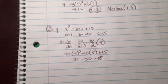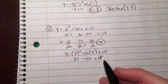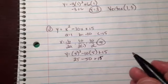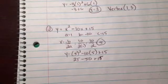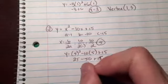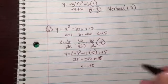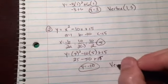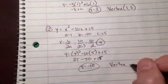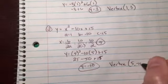All right, so 25 minus 50, that's -25, and then add 15 to that, that's -10. So you get y = -10. Therefore the vertex is (5, -10).